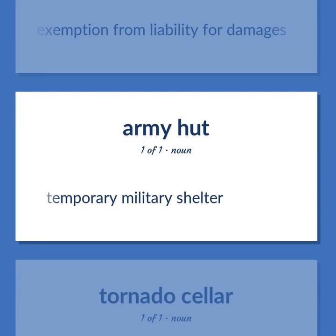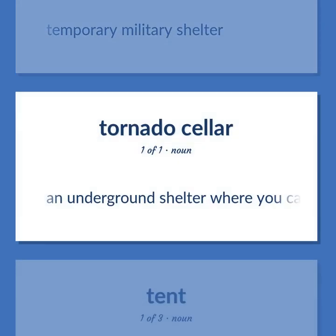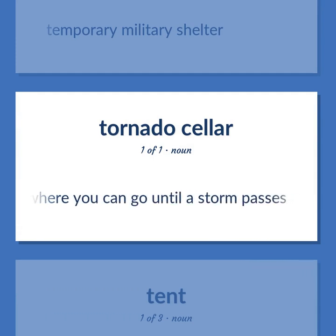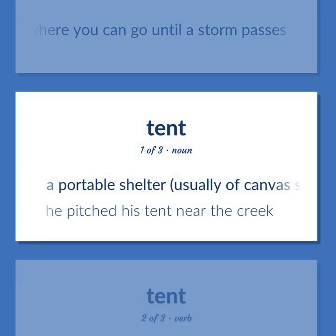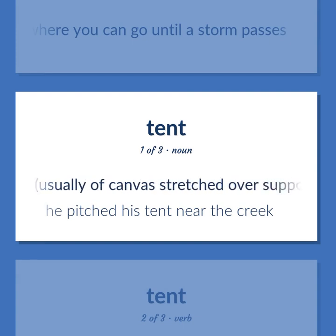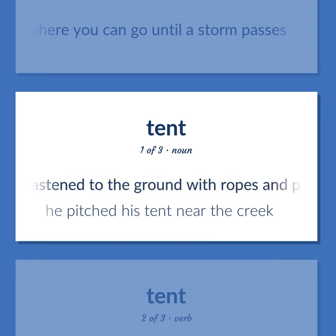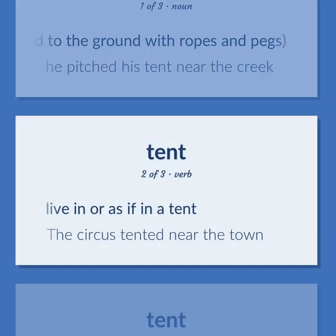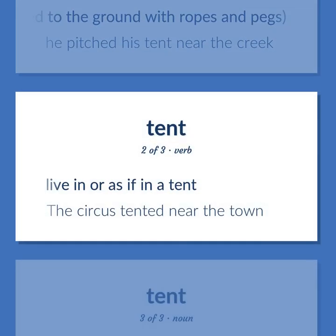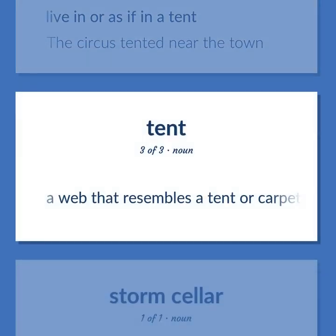Temporary military shelter. An underground shelter where you can go until a storm passes. A portable shelter, usually of canvas stretched over supporting poles and fastened to the ground with ropes and pegs. He pitched his tent near the creek. Live in or as if in a tent. The circus tented near the town. A web that resembles a tent or carpet.